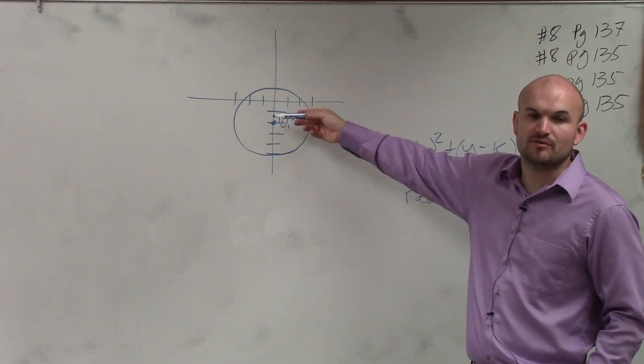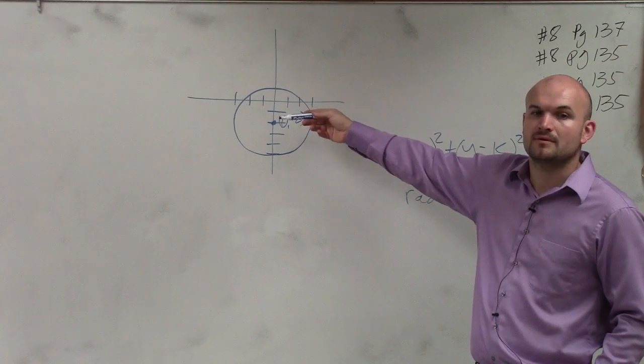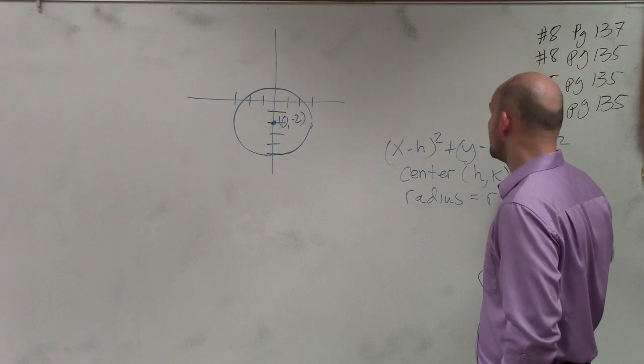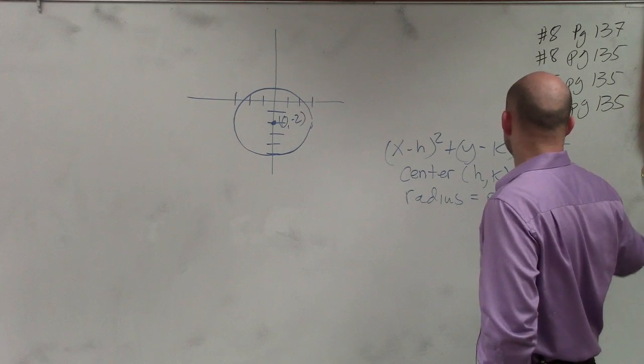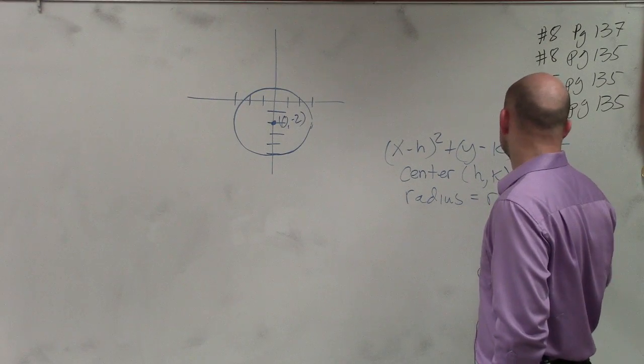No, but what's the distance from the center to the edge? 3, right? So we can say the center is (0, -2) and the radius equals 3. Does that make sense?